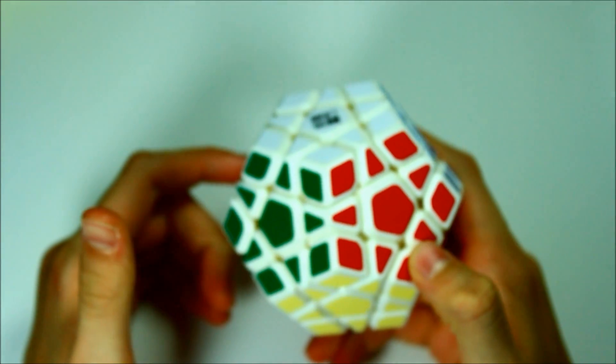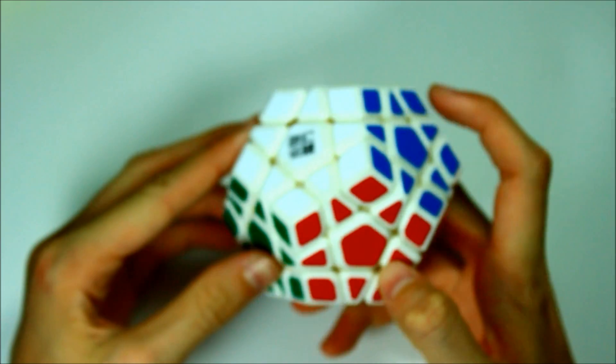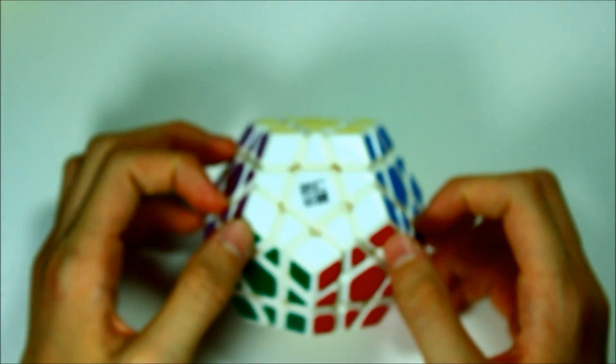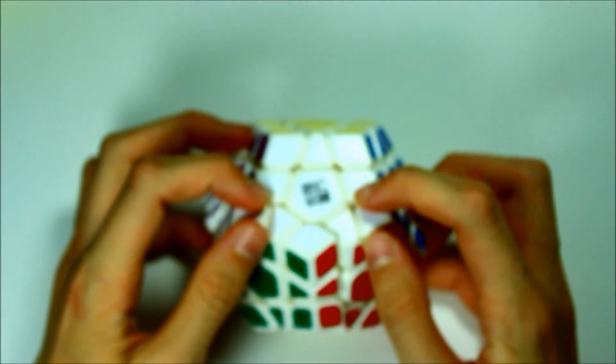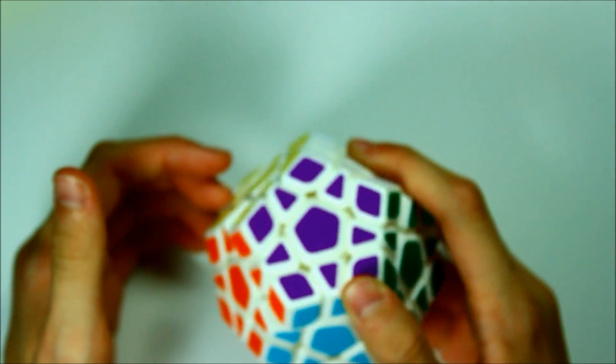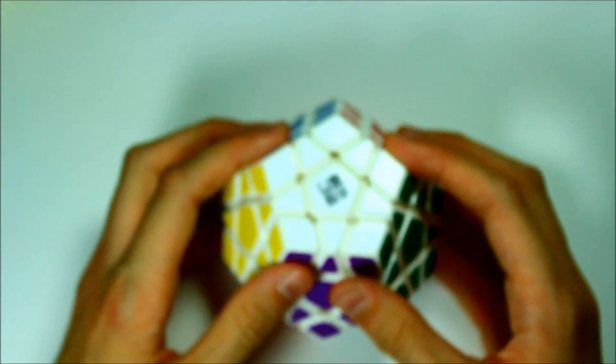I actually got this for free because Pavan Ravendra, you may have seen his 5.58 single in the finals, I think it was Saturday or so. He got this cube for free and he doesn't like white cubes so he gave it to me. Thank you so much to him.